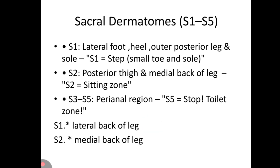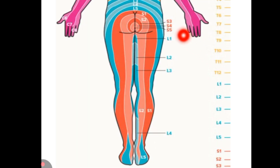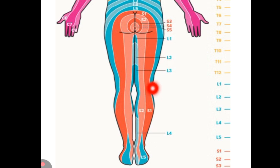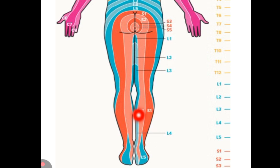Here is the visual representation of S1 to S5 dermatomes. S1 supplies the lateral leg, S2 supplies the medial thigh and posterior leg — this is the posterior view of leg and thigh. S3, S4, and S5 cover the twilight zone, that is the perianal area.